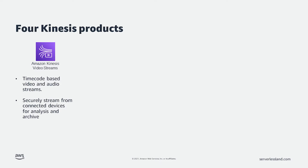Kinesis offers four different products for working with large-scale streaming data. The first, Kinesis Video Streams, works with timecode-based video and audio streams. You can securely stream from connected video devices. That video can then be analyzed using ML, processed for different formats, and stored for later use.